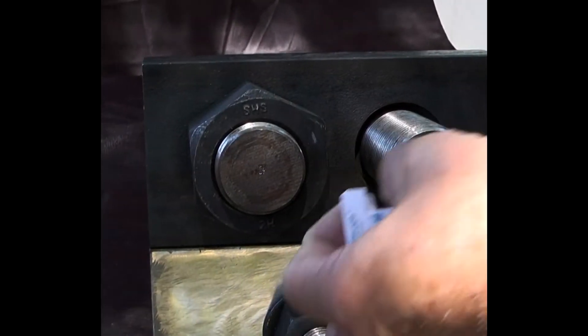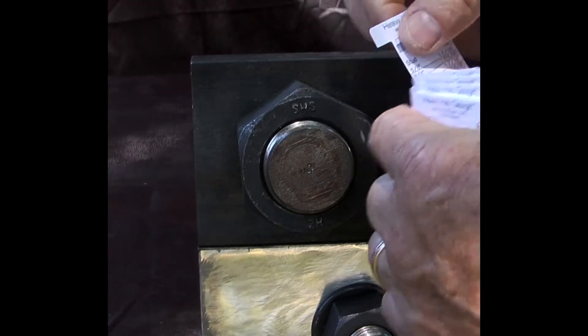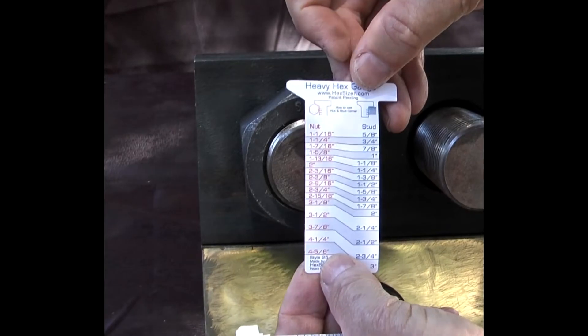I sell 10 packs of heavy hex gauges. They're loose in there so you can just hand them out. They're marked on both sides for right handers and left handers. Help your guys know the nut size.